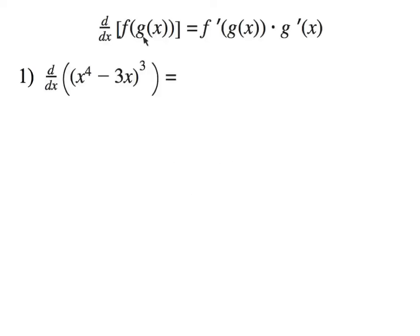Section 3.1: the chain rule. The chain rule comes from a composite function. A composite function is when you have a function g of x inside of another function f of x — a function inside of a function. The derivative works like this: you take the derivative of the outside function, leaving the inside function just sitting there, and then you take the derivative of the inside function and multiply by it at the end.